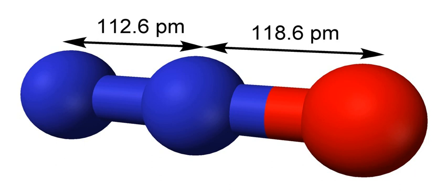Atmospheric occurrence. Nitrous oxide is a minor component of Earth's atmosphere, currently with a concentration of about 0.330 ppm.